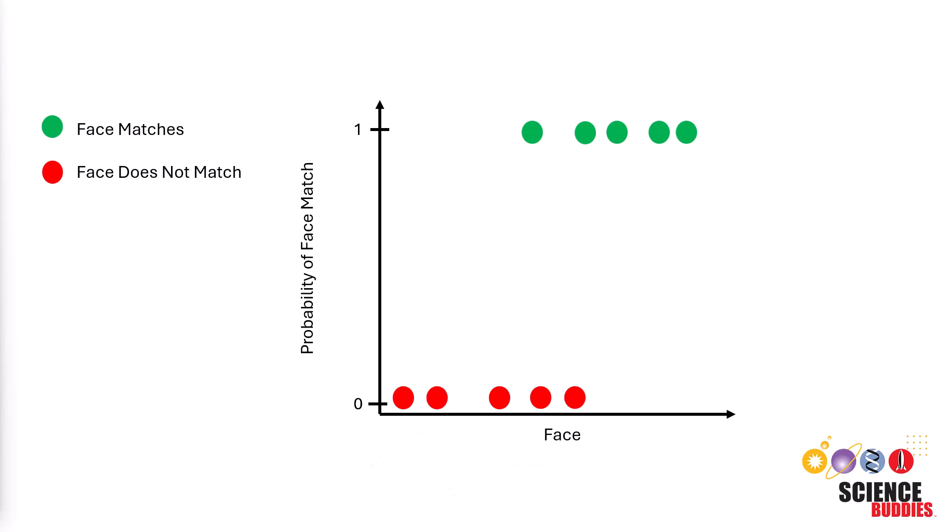If we want to predict whether new inputs match the individual or not, we can first apply our activation function. To the left of the graph, we can see the probability that a face matches or not, with 1 meaning the face definitely matches and 0 meaning the face definitely does not match.